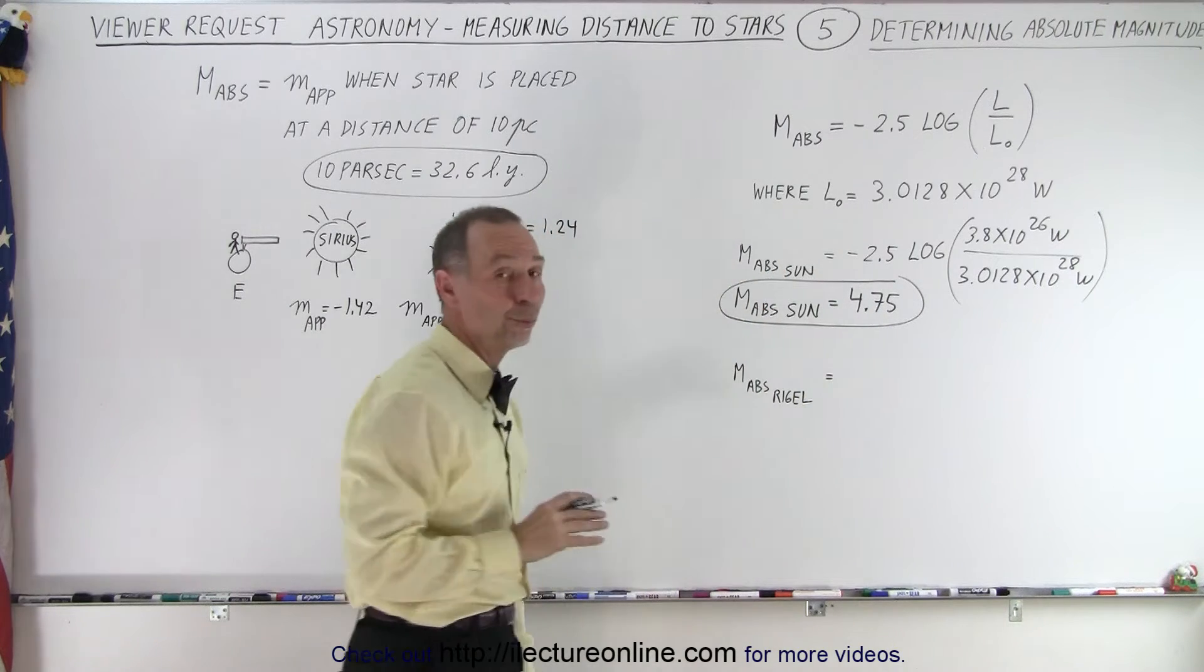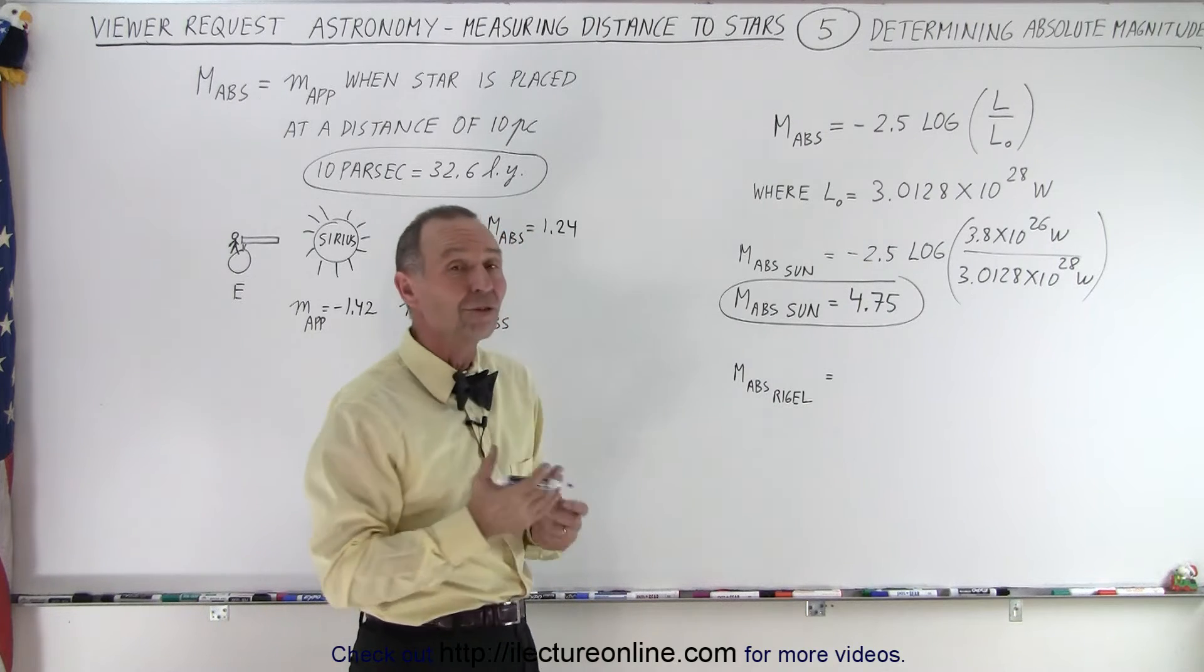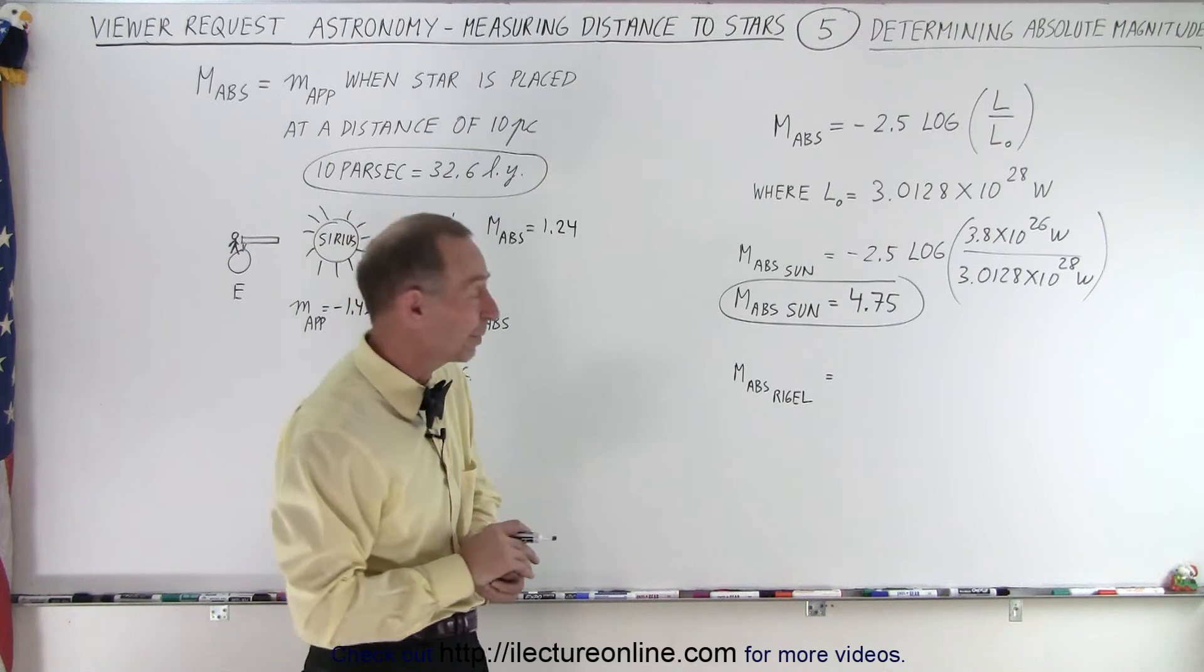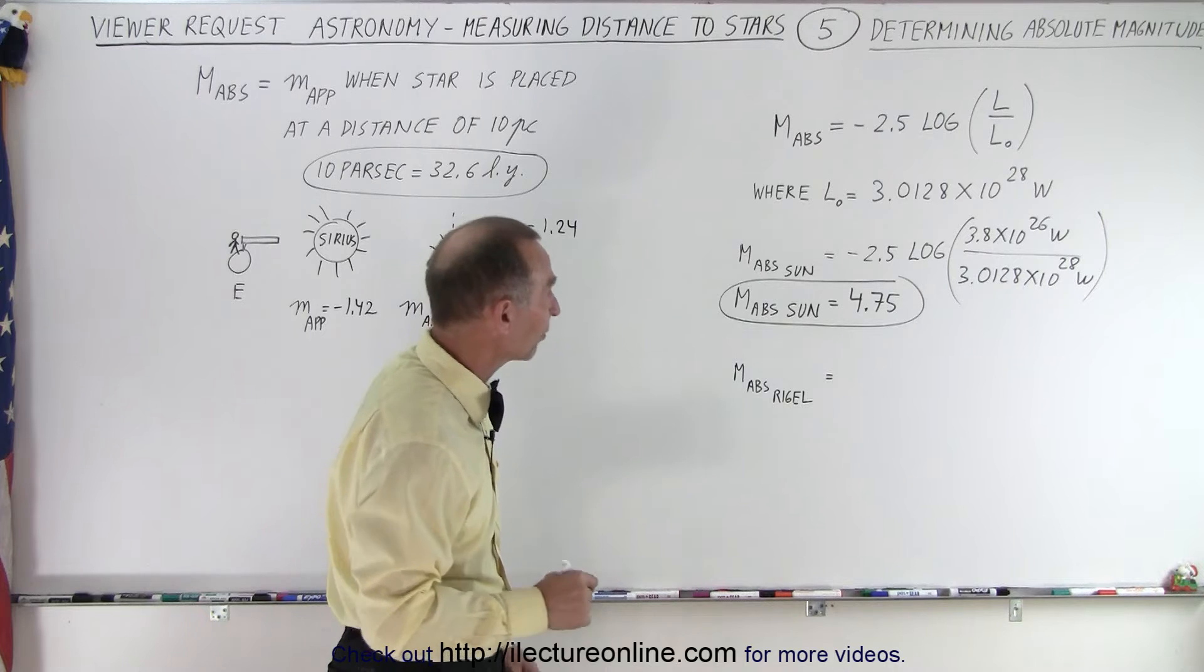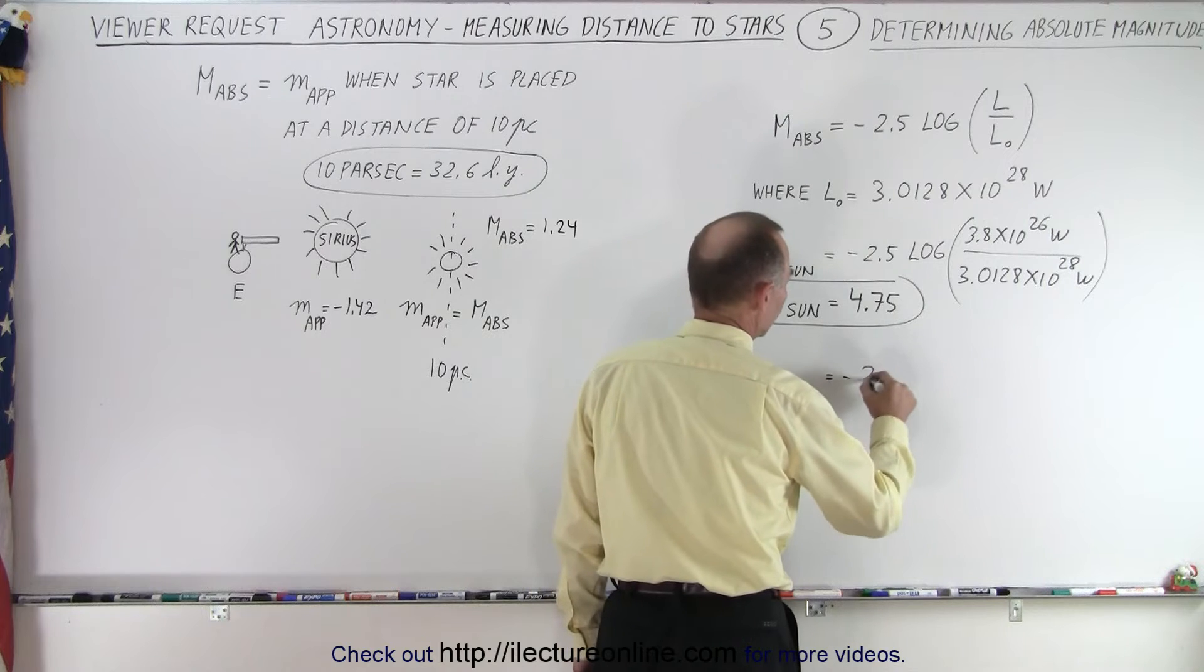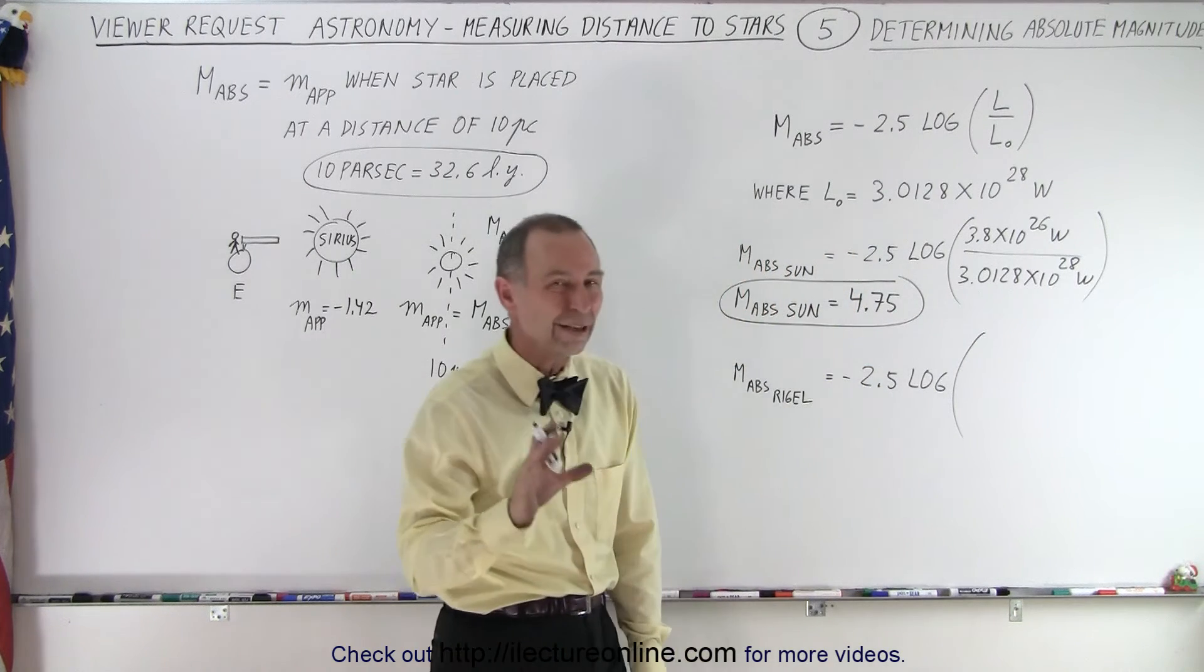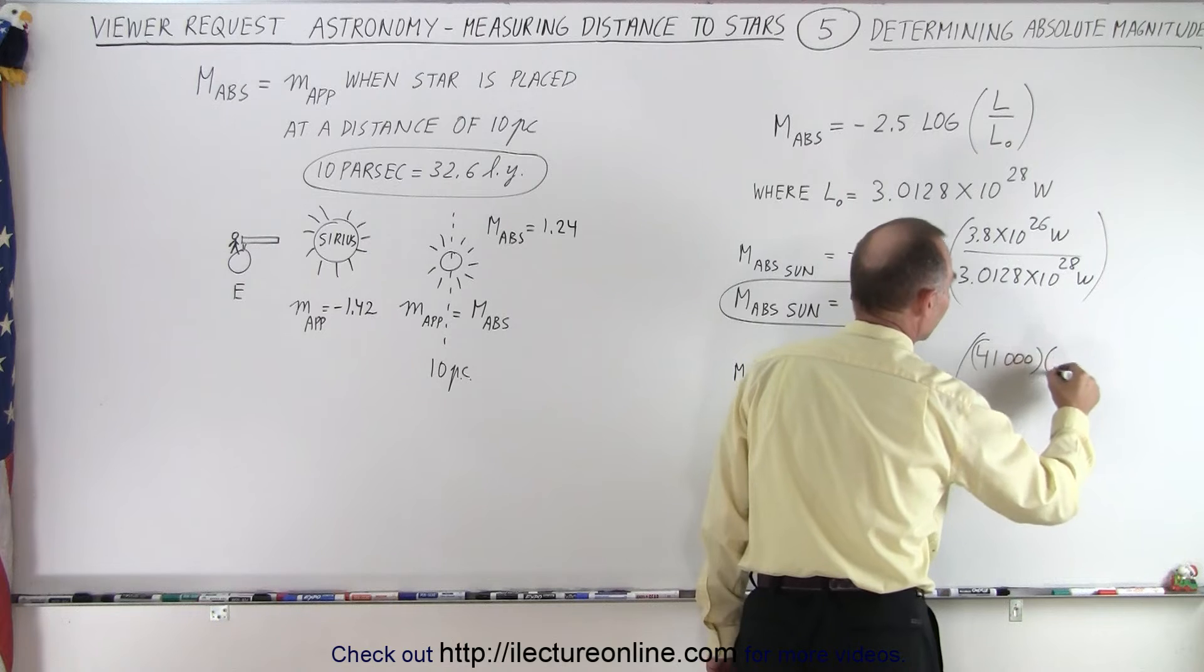Just to see what it would be like for Rigel. Now, of course, Rigel is a tough one to work with because the luminosity of Rigel is not absolutely determined. But I've seen estimates anywhere from about 40,000 to about 110,000 times the luminosity of the sun. So let's take, I think the latest number that I've looked at was 41,000. So let's use that. So the absolute magnitude for Rigel is minus 2.5 times the log of the luminosity of the star. Now, Rigel is, let's say, 41,000 times the luminosity of the sun, which is 3.8 times 10 to the 26.